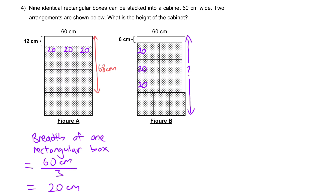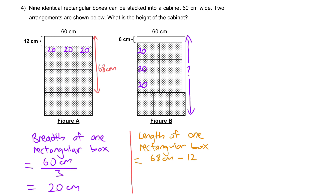The length of one rectangular box is 68 cm minus 12 cm, then divided by 2, which gives 28 cm.